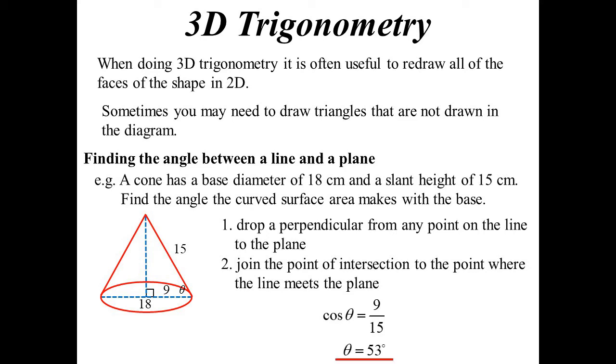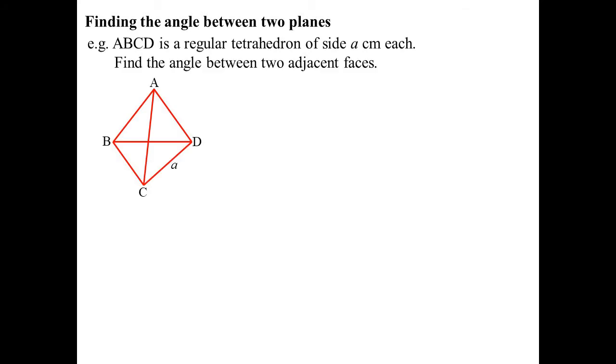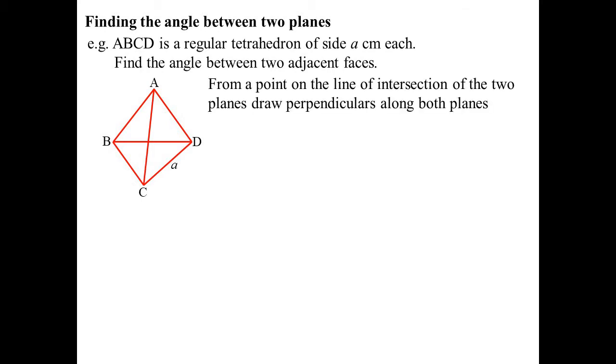So if you've got a line meeting a surface, just drop anywhere from the line down to the base, and then join that point of intersection across and create a triangle. Now, if it's between two planes that are intersecting, here's an example of that. ABCD is a tetrahedron. And all sides are A. Find the angle between two adjacent faces. So two faces are meeting each other. From a point of intersection on the line of the intersection of the two planes. Now, I can pick any two planes that I like. Obviously, they've got to be meeting.